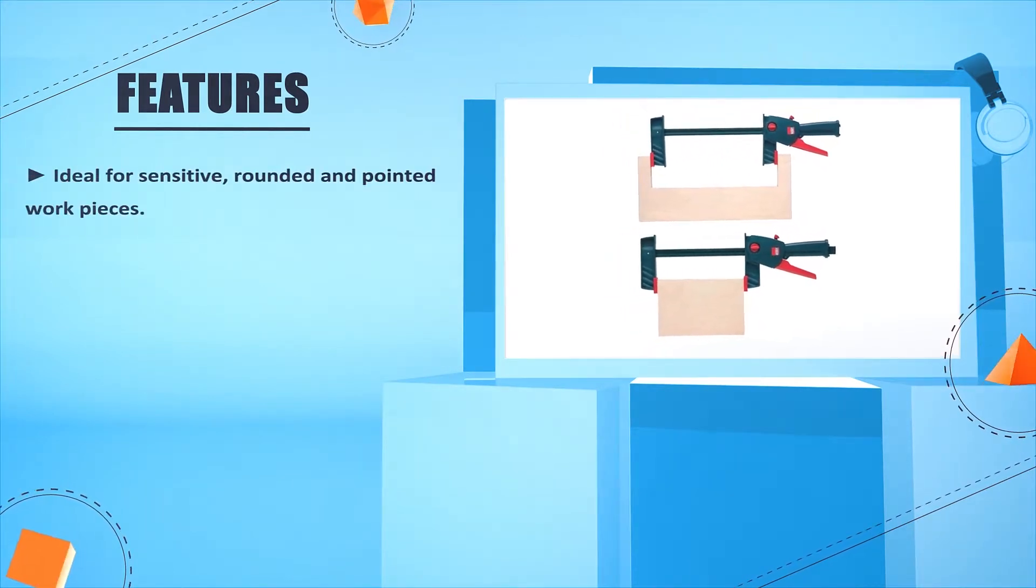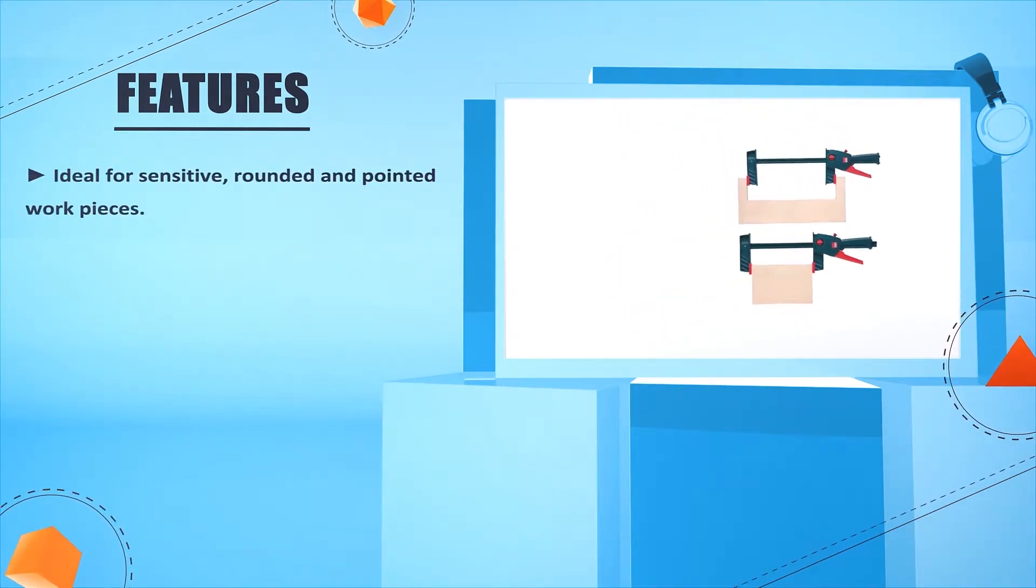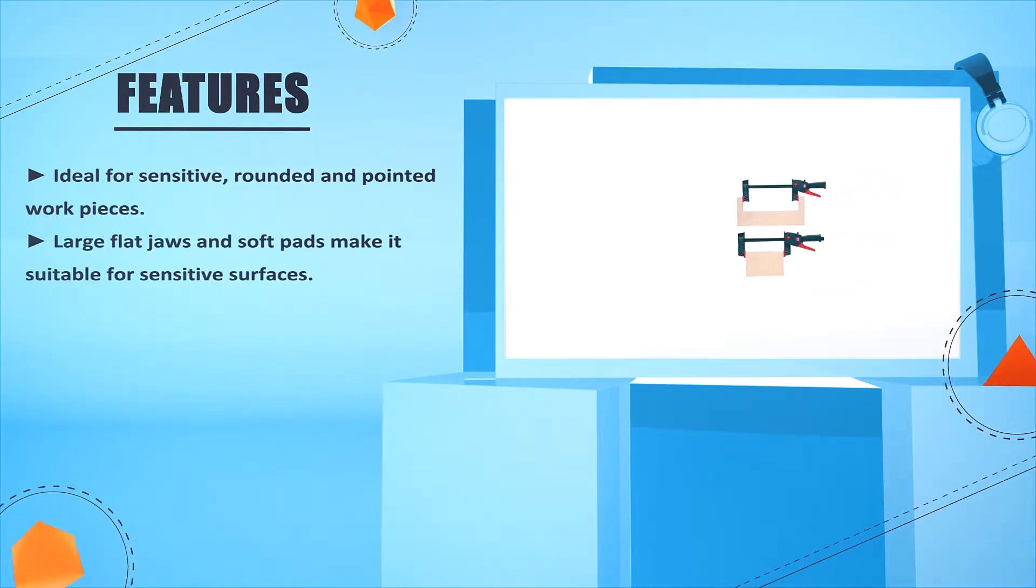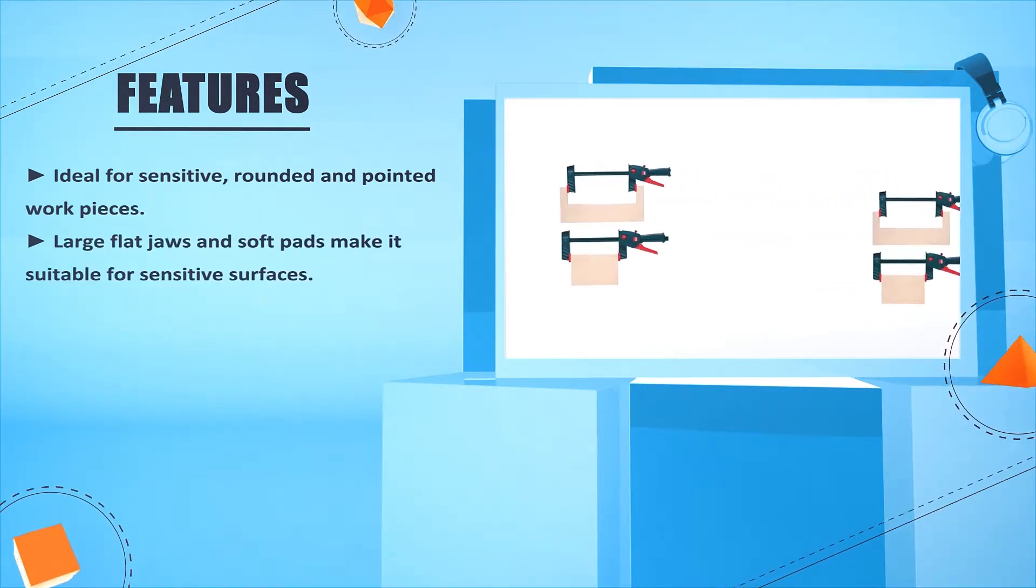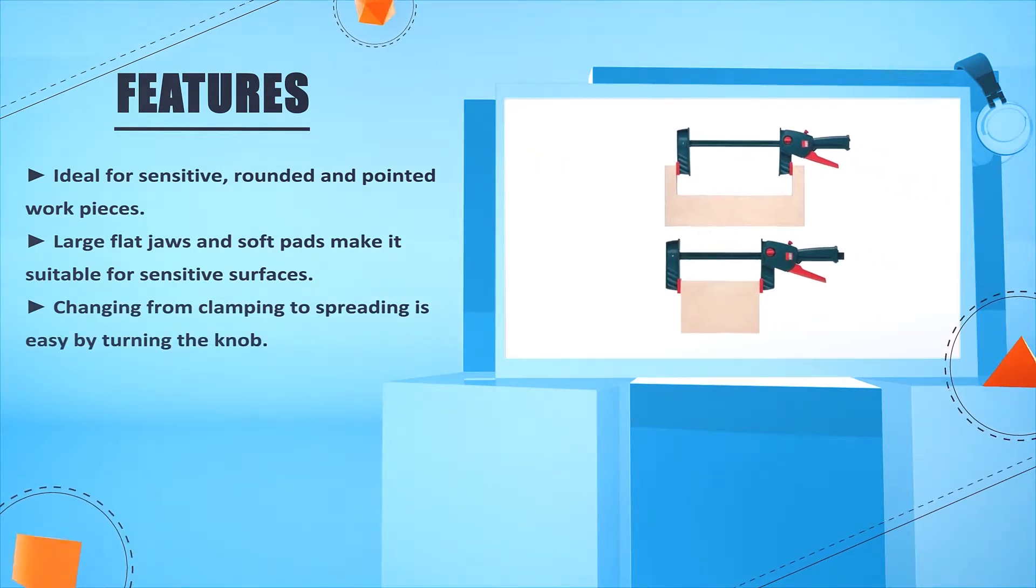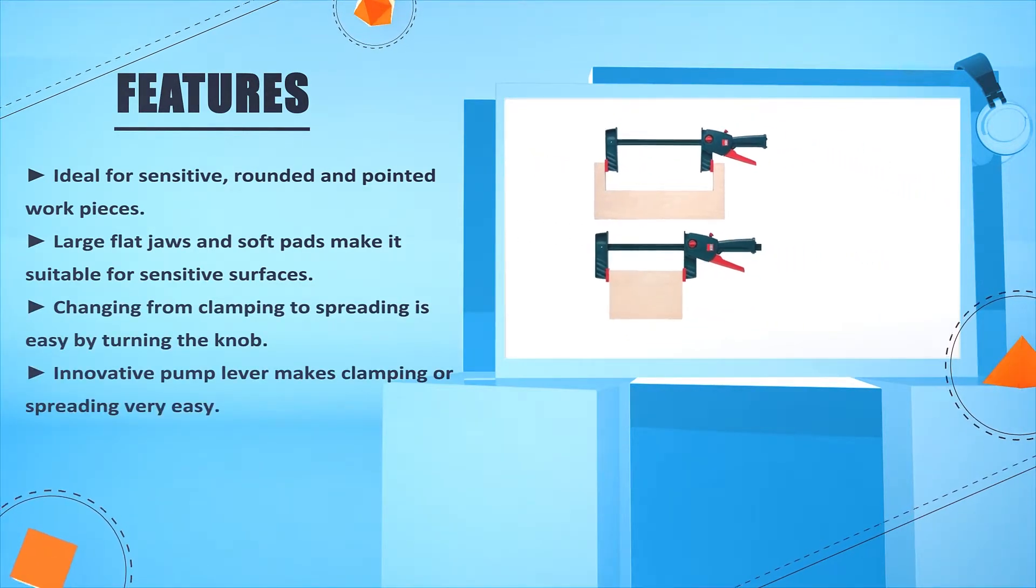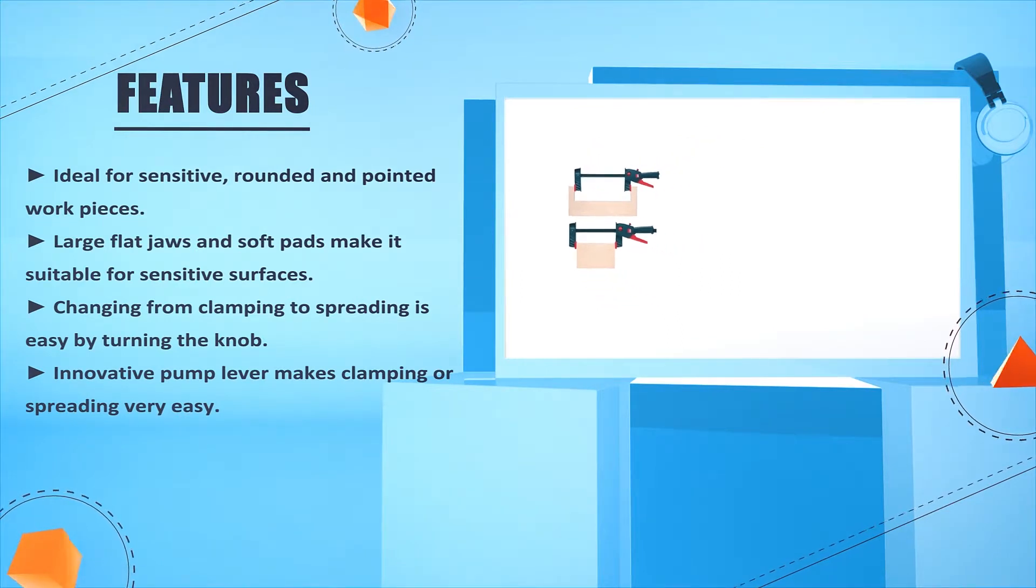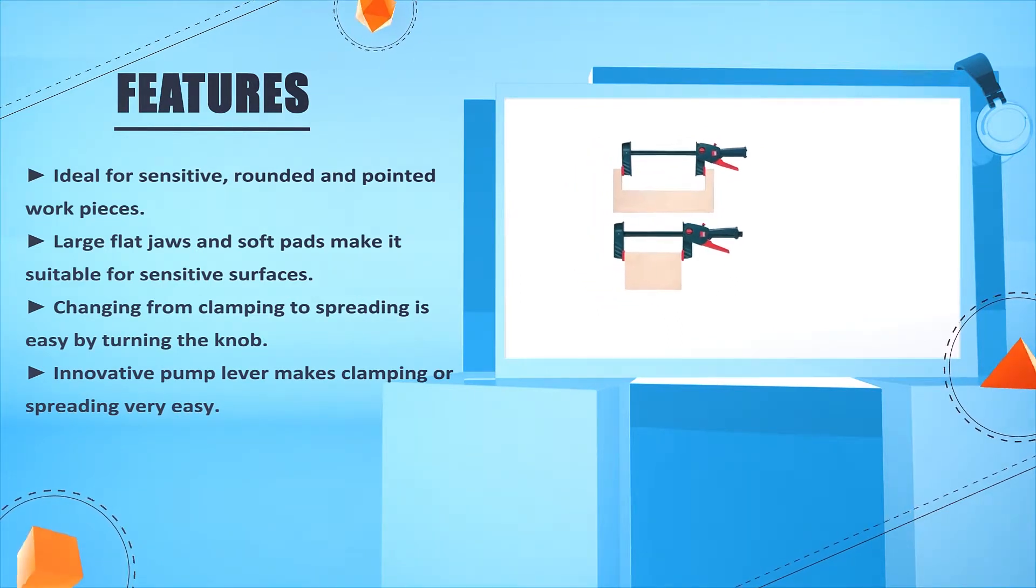Ideal for sensitive, rounded, and pointed workpieces. Large flat jaws and soft pads make it suitable for sensitive surfaces. Changing from clamping to spreading is easy by turning the knob. Innovative pump lever makes clamping or spreading very easy.